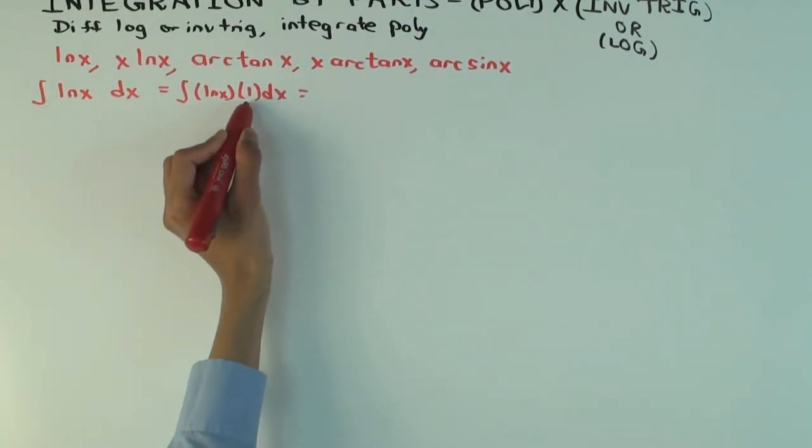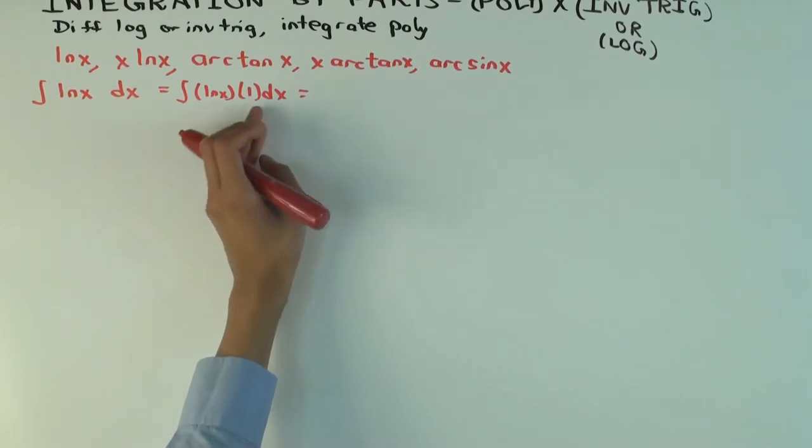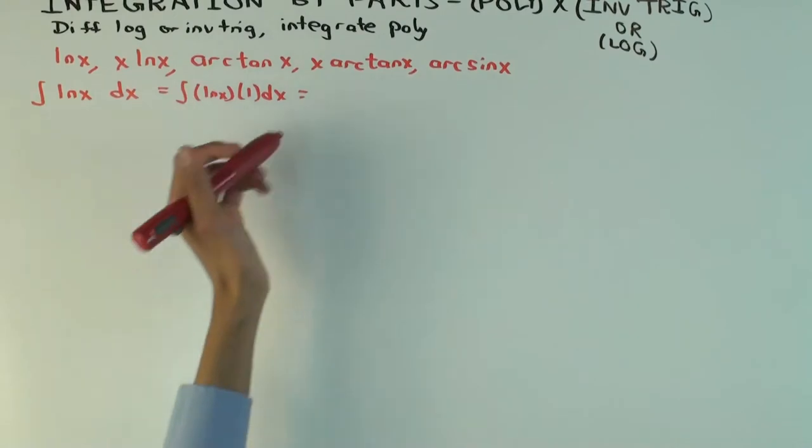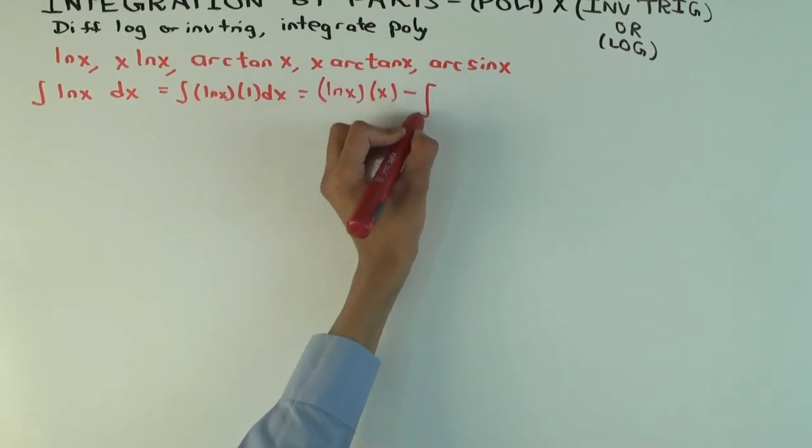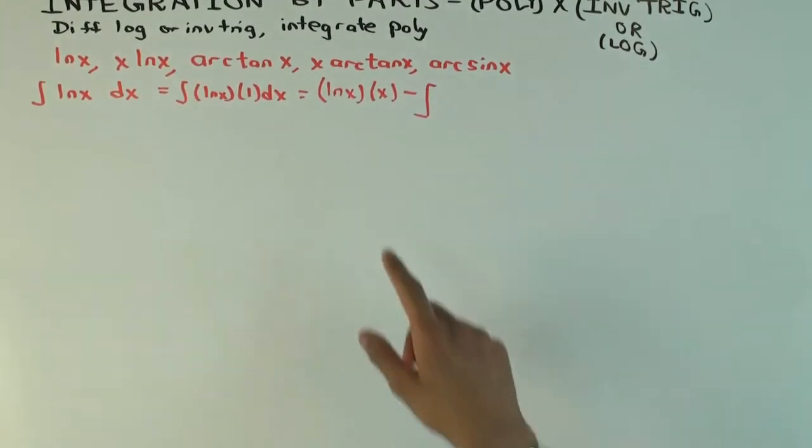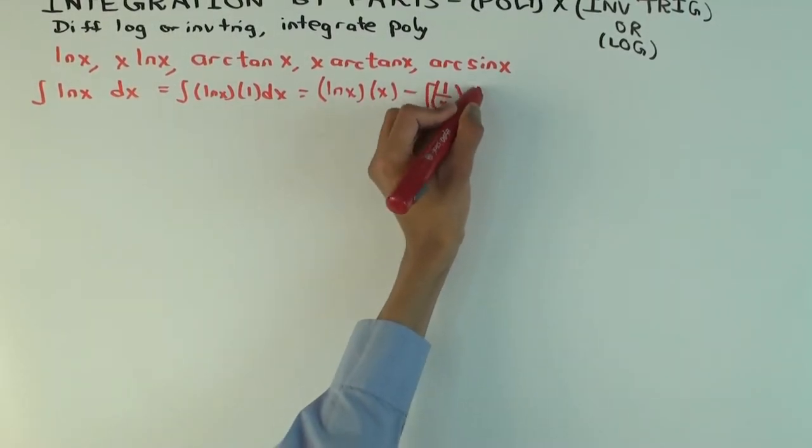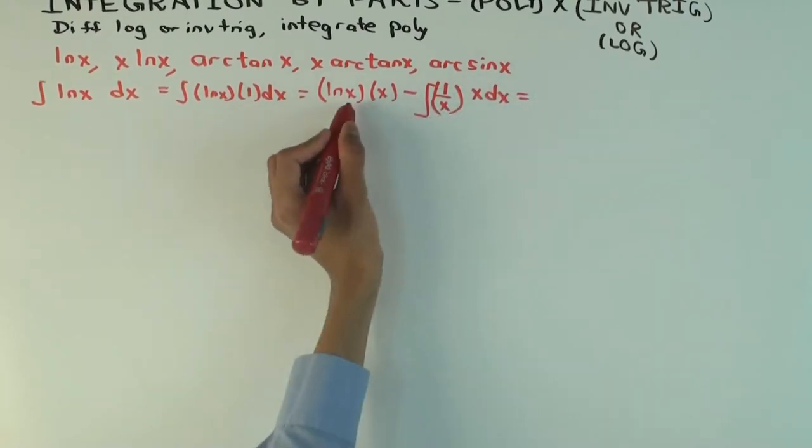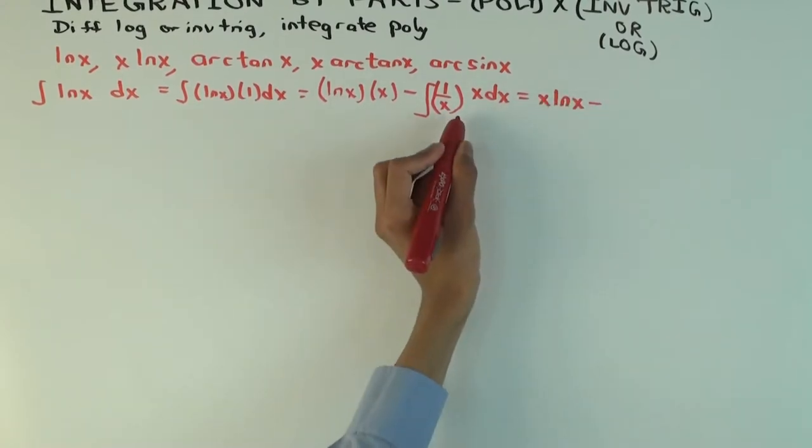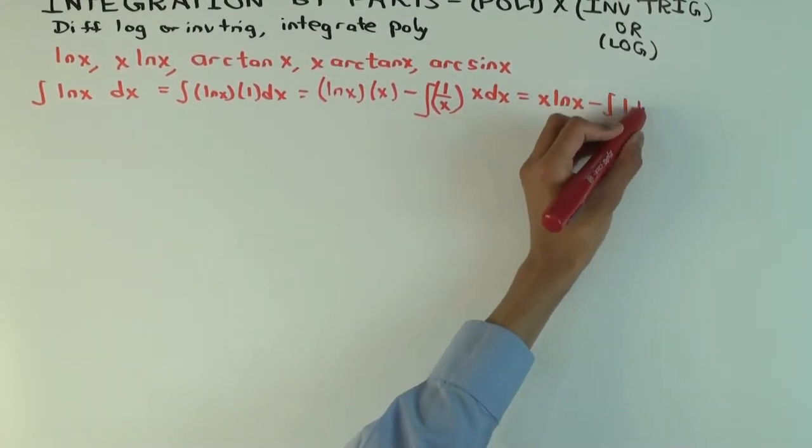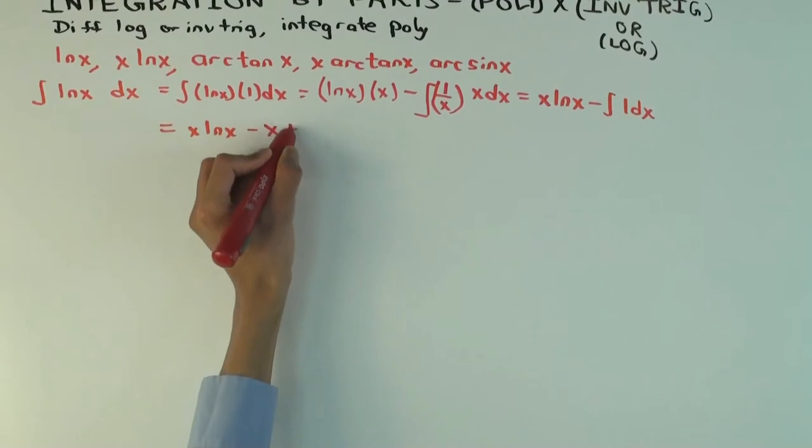But this is ln x times 1 dx. So now I take that polynomial part, 1, as the part to integrate. So this is a trick you need to do. So whenever you have something like this, you just put a 1 there. So it's ln x times x minus the integral of, derivative of ln x is 1 over x times x dx. So I can just read ln x x as x ln x, it makes it look nicer, minus the integral of 1 dx.